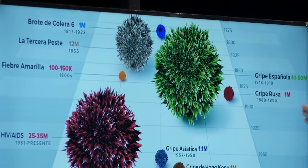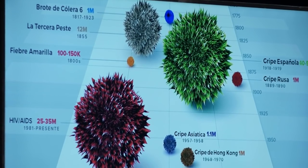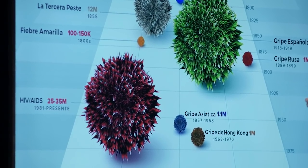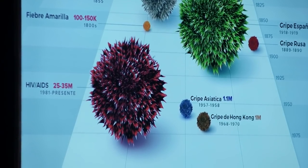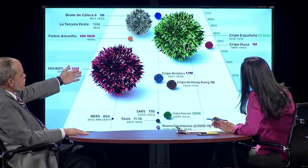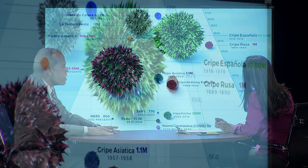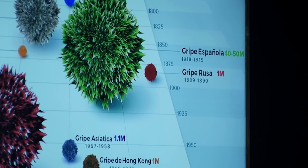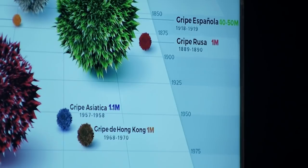La fiebre amarilla, 100 a 150 mil personas. La epidemia de HIV, que ya nadie llama epidemia o pandemia, del año 1981 cuando se diagnosticaron los primeros casos hasta el presente, entre 25 y 35 millones de personas han muerto. Y la famosa gripe española, justo después de la Primera Guerra Mundial: un mundo que sale de una Primera Guerra Mundial y tiene una gripe española, que no fue más que un flu, terminó matando 40 a 50 millones de personas solamente en un año.